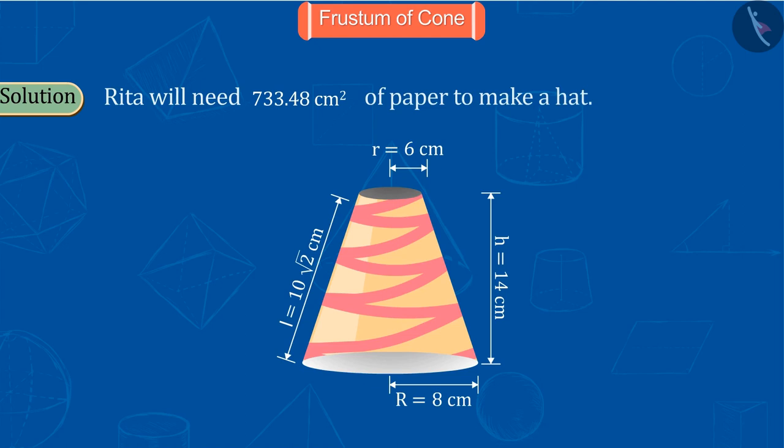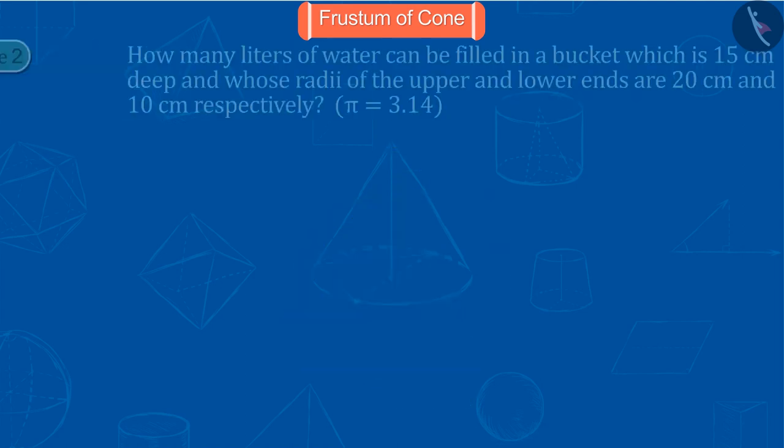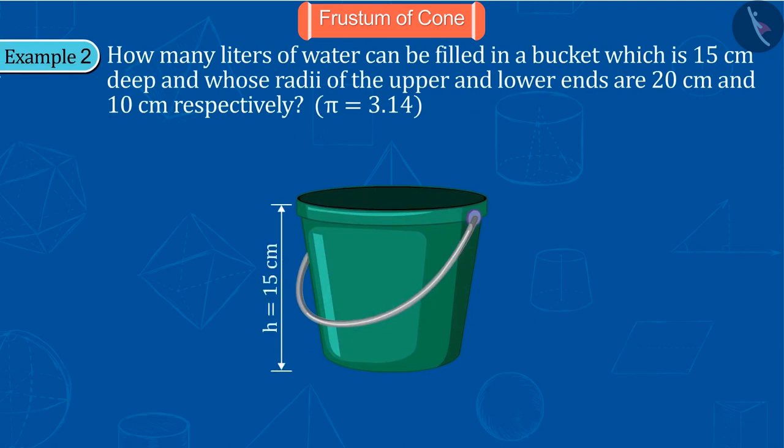Let's see another example. A bucket which is 15 centimeters deep and the radius of the upper and the lower portion of which is 20 centimeters and 10 centimeters respectively, then how much water will it hold? From the question we know that the radius of the top of the bucket is 20 centimeters and that of the bottom is 10 centimeters, and with the depth 15 centimeters. Also in this question the value of pi is given as 3.14.